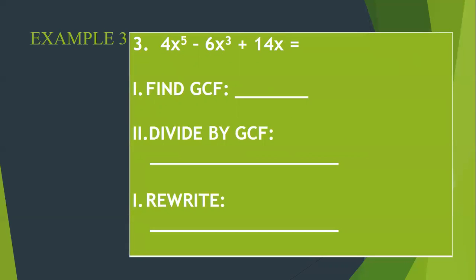All right. Doesn't matter how many terms there are, you still have to look at all terms, and they have to all have something in common. So when I look at all the terms, I have 4, 6, 14. What is the greatest common factor between 4, 6, and 14? Two. Now I'm going to look at the variable. I have x to the 5th, x to the 3rd, and x. What is the least amount of that variable do I have? x. So my GCF is 2x.